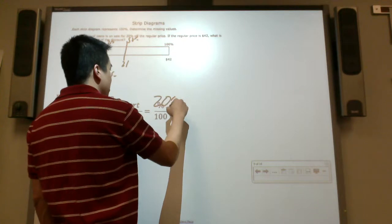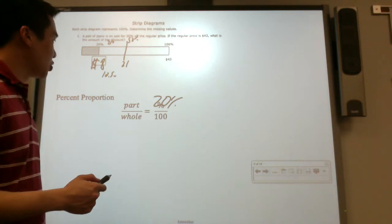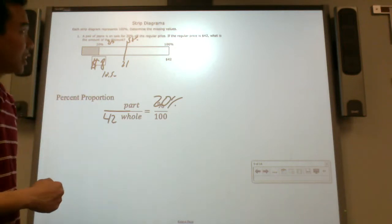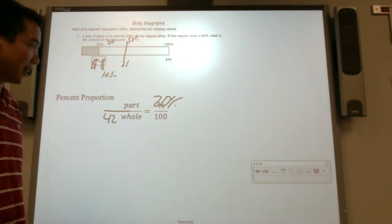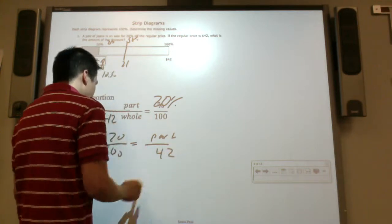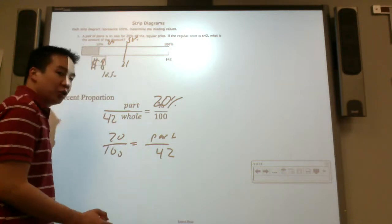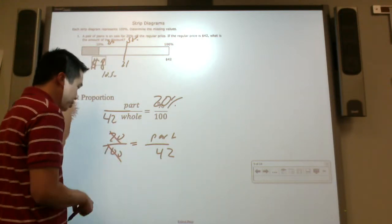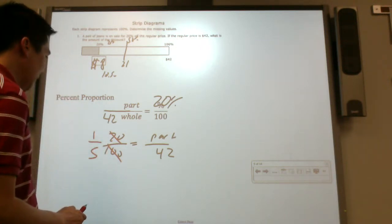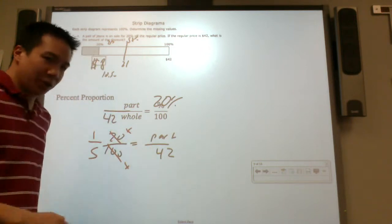I'm going to use percent proportion because I feel like I'd rather use this one. I know it's on sale for 20% off. That's percent. If the regular price is $42, that's the whole. We need to find the saving, the discount, part of the price that you will not be paying. I'm going to reverse this. Can 100 be broken down to 42? It can be. I'm going to use easier numbers. I'm going to break this down to 2 over 10 or 1 over 5.